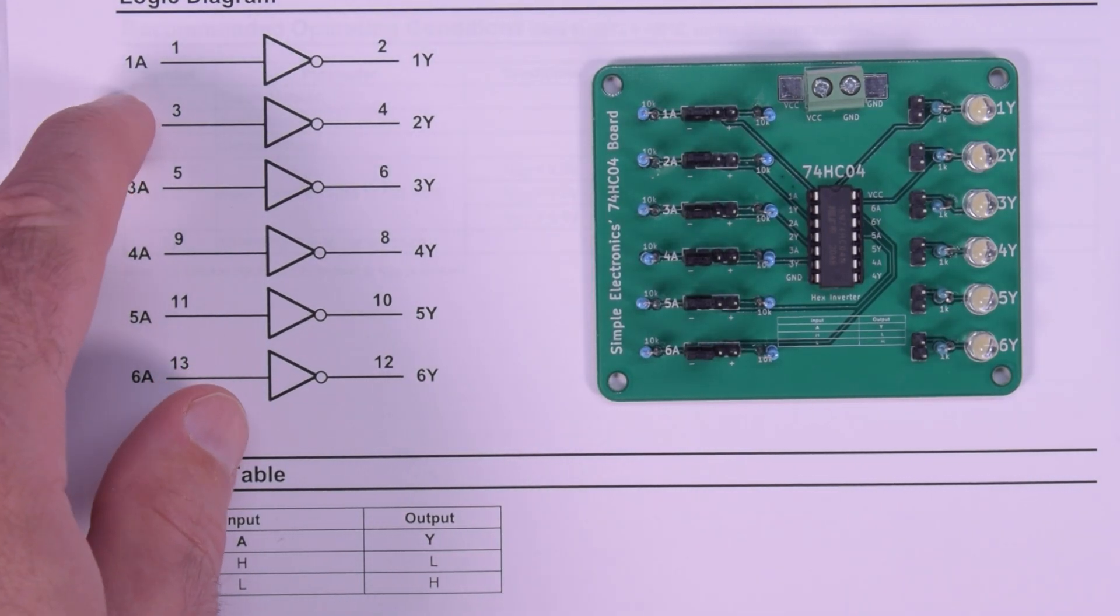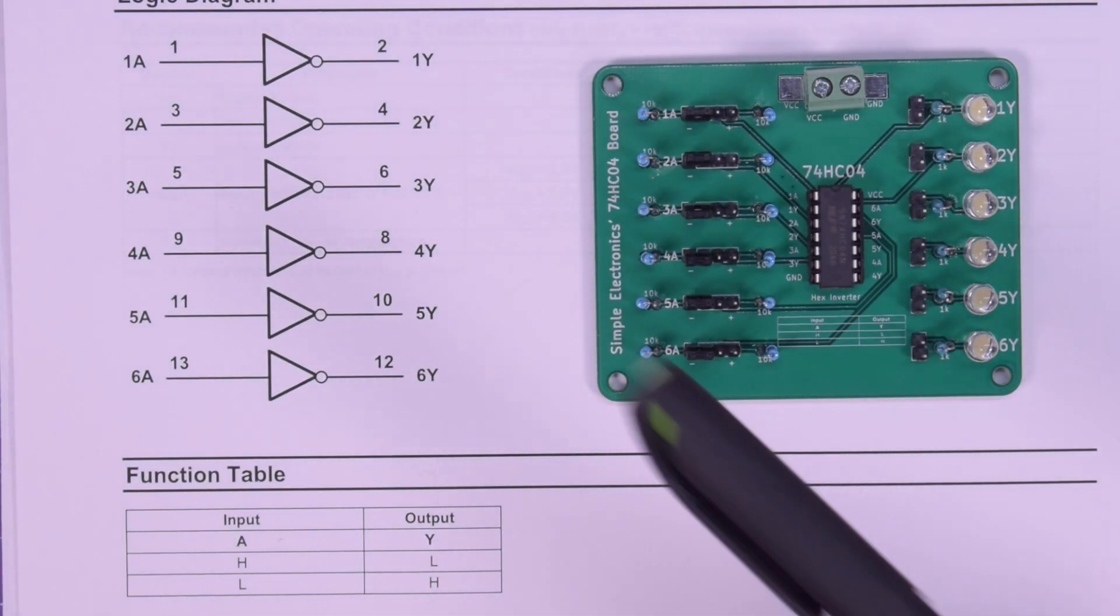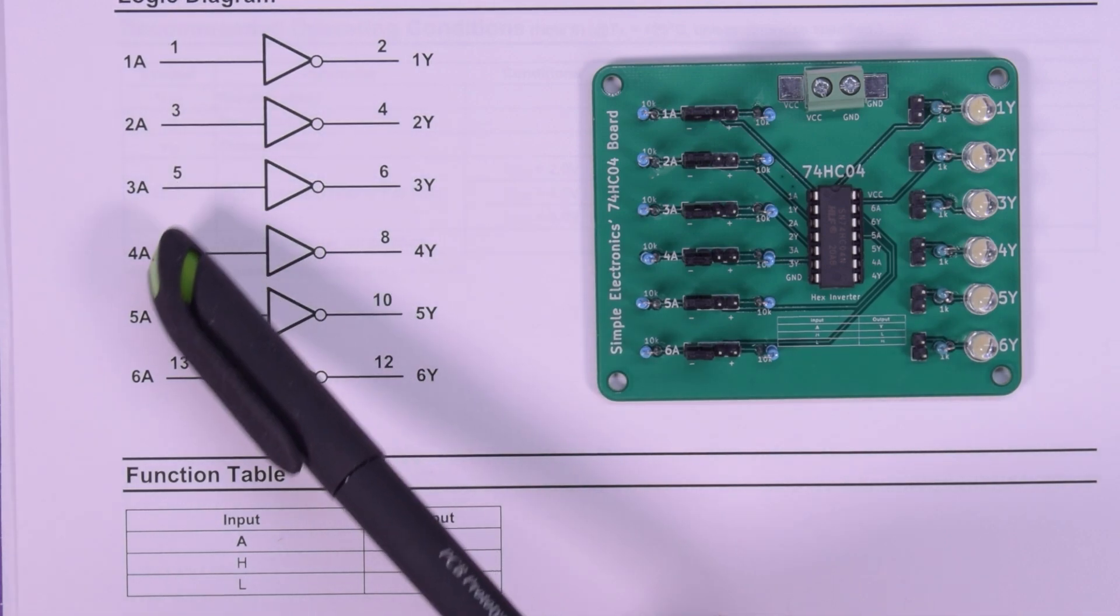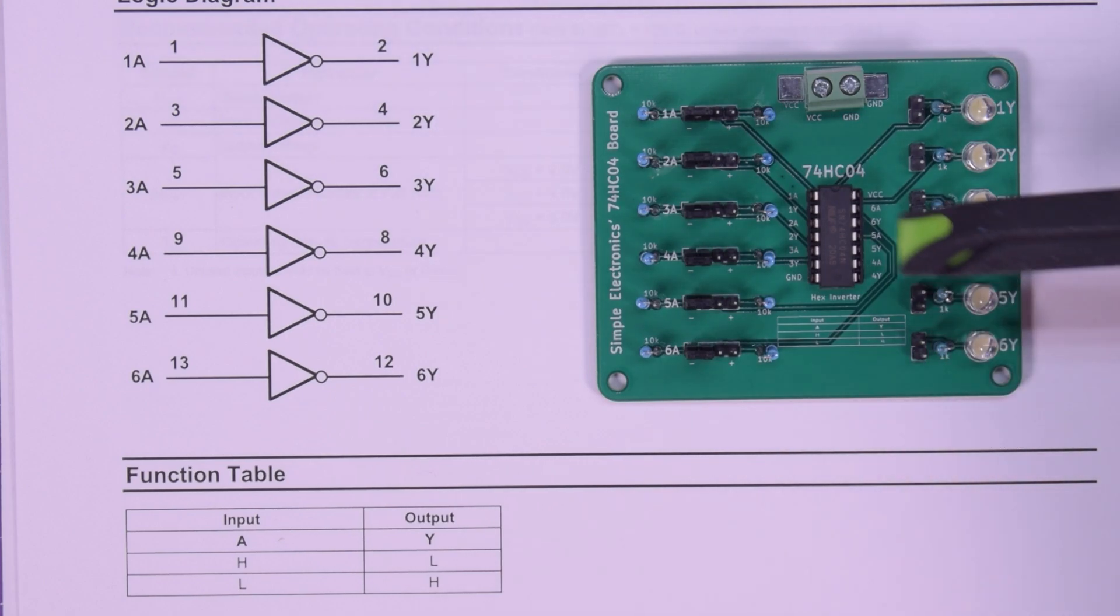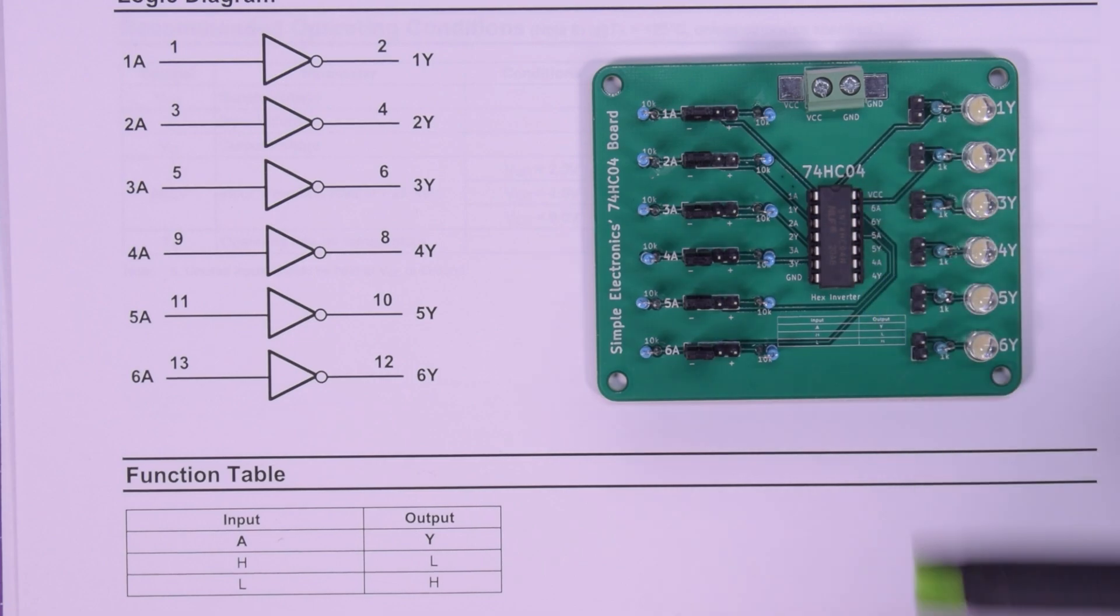You have six totally independent gates to do that with. Just to show off how simple it is, here's your function table or truth table. A and Y are in these columns. If A is high, Y is low. If A is low, Y is high. It's just that simple. Looking over on the board here, all of the inputs and outputs are written down on the silk. The function table is there.